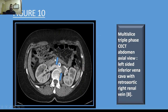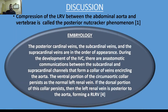Another variation is a left-sided inferior vena cava and a retroaortic right renal vein. Also to be discussed is compression of the left renal vein between the abdominal aorta and vertebra, which is called the posterior nutcracker phenomenon.